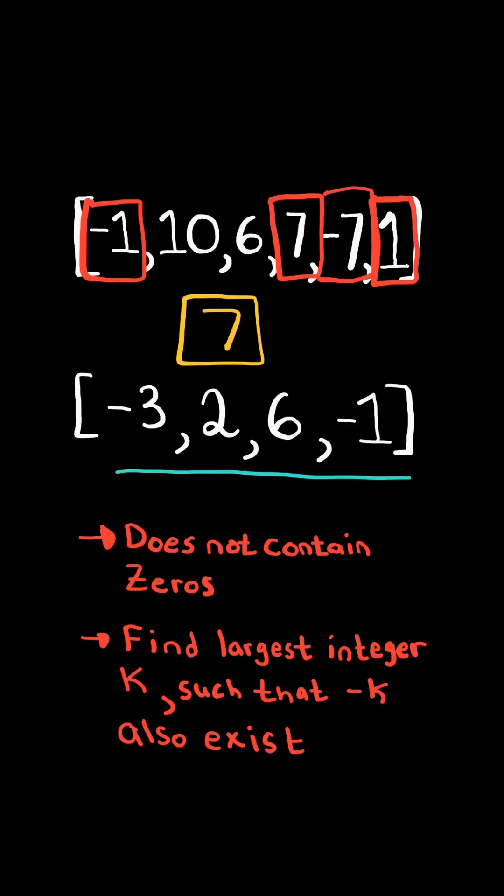Consider this new example. If the list does not contain a number and its negative, we return negative 1.